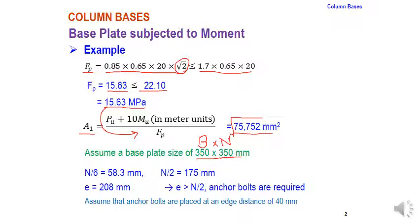Using N = 350 mm, N/6 = 58.3 mm and N/2 = 175 mm. Since eccentricity e = 208 mm is greater than N/2 = 175 mm, anchor bolts are required.